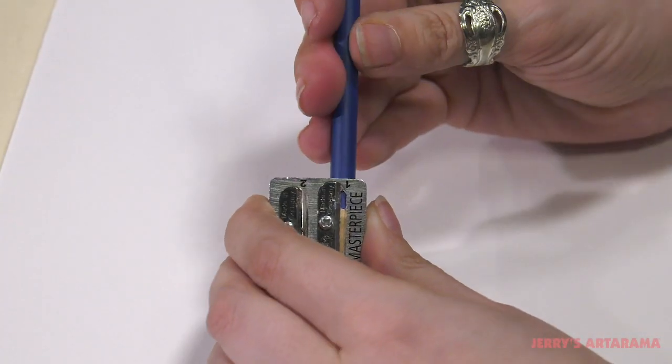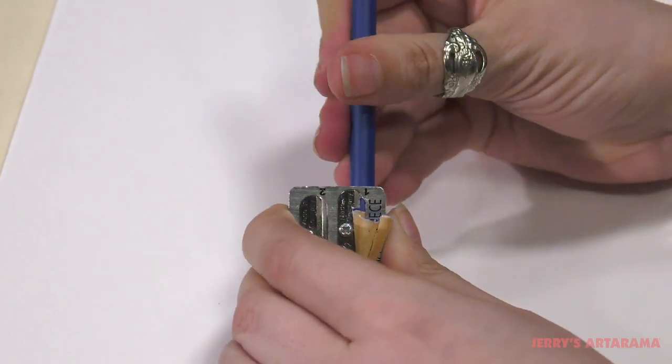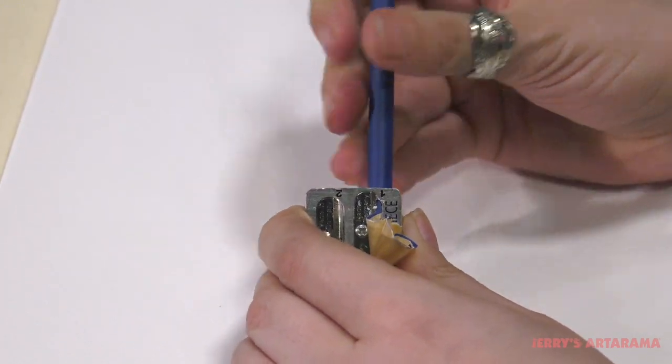Use hole one to remove the wood portion of your pencil. This works most effectively on perfectly centered pencils, most commonly found in professional artist pencils.